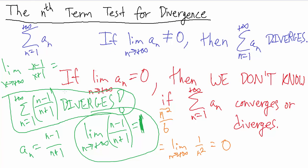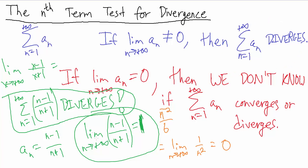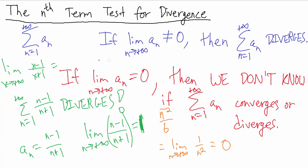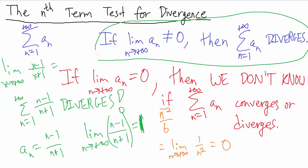So that's how the nth term test for divergence is useful. Take the limit as n goes to infinity of the sequence — if you get something that isn't 0, whether it's a finite number that's not 0 or the sequence itself diverges, then the series diverges automatically. That's why the nth term test is really the first one you want to use — it's going to be the quickest and easiest. If you take the limit of the sequence and get 0, then you can't say anything at all. You might have a convergent series or a divergent series. Very important to always keep that in mind.